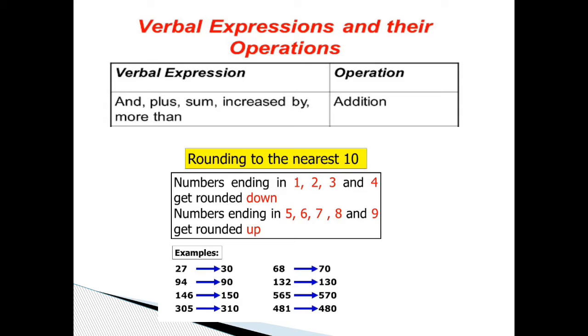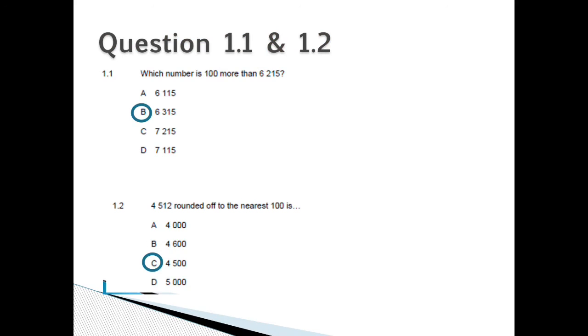Here are a few examples: 27 would be rounded up because the last digit is a 7, so it will become 30. 94 rounded off would go down because a 4 is a lower digit which will give us 90. Question 1.1's answer is B. 6,315 and 1.2's answer is C. 4,500.